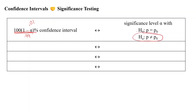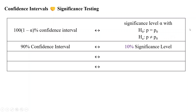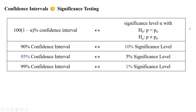The other important detail is your alternative has to be not equal to. This only works — they only agree with each other — when you're looking at an alternative saying not equal to. If you have less than or greater than, this method will not work the way we are setting it up. So your significance level and your confidence level have to add up to 100, and your alternative has to be not equal to. For example: 90% confidence with 10% significance, 95% with 5%, 99% with 1%.